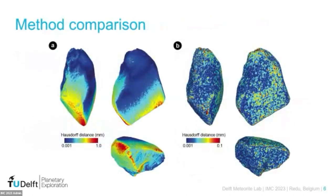We've also looked into different techniques and compared 3D model accuracy. These color maps show the so-called Hausdorff distance — a comparison between two 3D models showing the error between meshes. In figure A, an example of structured light scanning, you can see a very large error of close to a millimeter in one region due to a mismatch between the two scan halves. Figure B shows a laser-scanned object, which lacks a beautiful photographic texture but demonstrates that the quality of laser scanning models is on par with photogrammetry techniques.